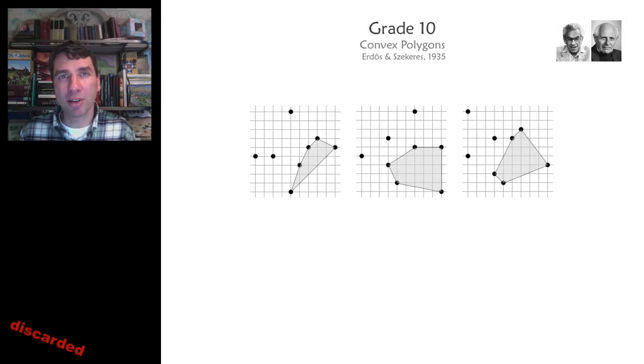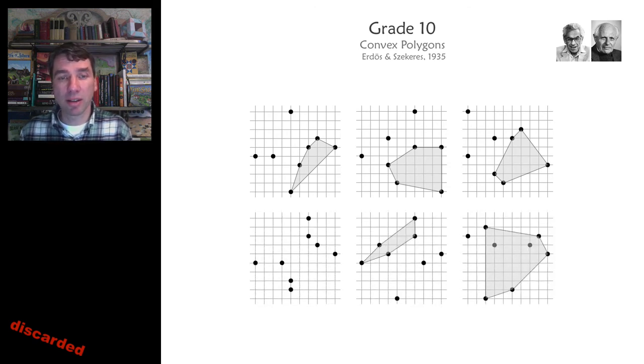How many points do you have to add to a grid before you know that there is at least one convex pentagon? Well, it looks here that the number might be 8. But in fact, it's not. On the lower left, you see an example of how you might organize the points in this 10 by 10 grid. You can organize 8 points so that there is no convex pentagon formed by the vertices.